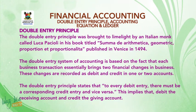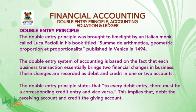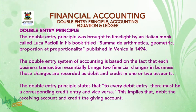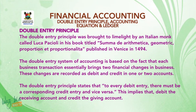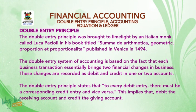The double entry principle was brought to limelight by an Italian monk called Luca Pacioli in his book titled Summa de Arithmetica, Geometrica, Proportioni et Proportionalita, published in Venice in 1494. The double entry system of accounting is based on the fact that each business transaction essentially brings two financial changes in business. These changes are recorded as debit and credit in one or two accounts.